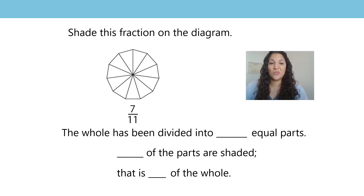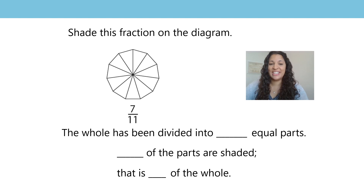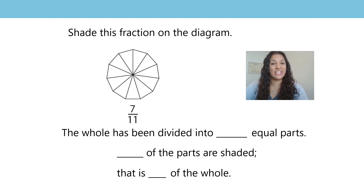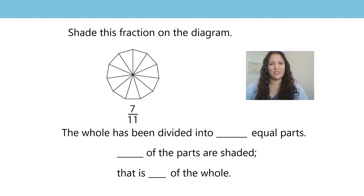Let's look at this last one together. It says, shade this fraction on the diagram. The fraction is 7 elevenths. Can you work out what 7 elevenths of this diagram will look like when it's shaded? Pause the video now to have a go at this at home. Can you visualize what 7 elevenths would look like when shaded in? How would you fill in those sentence stems?